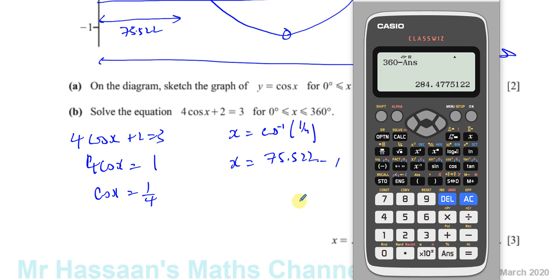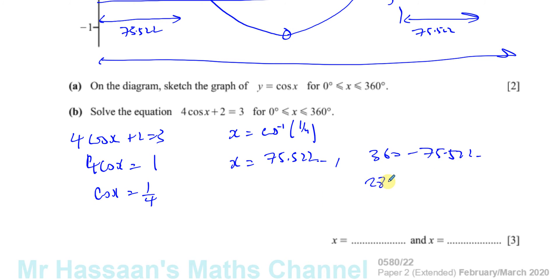Gives us 284.4775°. 284.477° continuing. So therefore we have the two solutions which are 75.5° rounded to one decimal place, and you have 284.5° rounded to one decimal place.